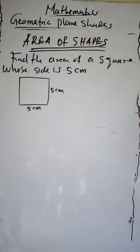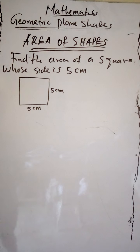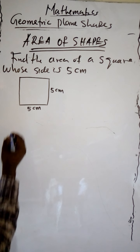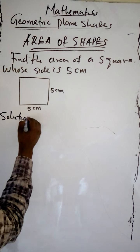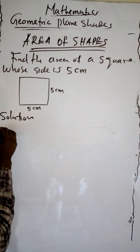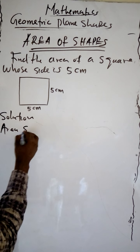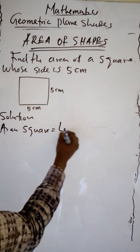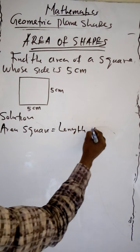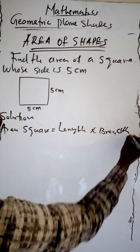Welcome back. This period we want to calculate the area of shapes. The first one we want to look into is square. To calculate the area of a square, it is equal to length times breadth.